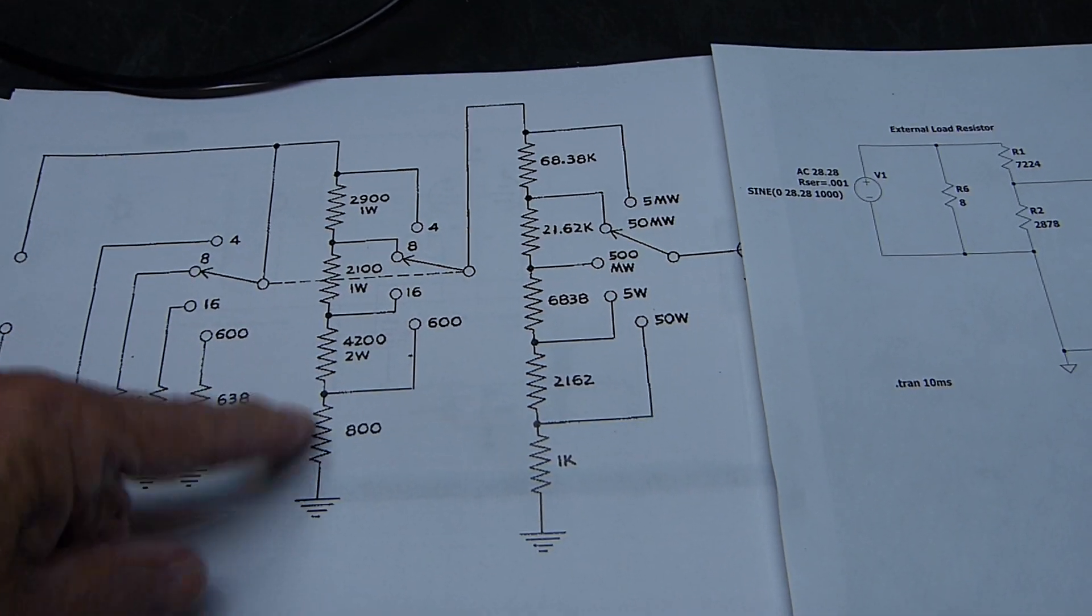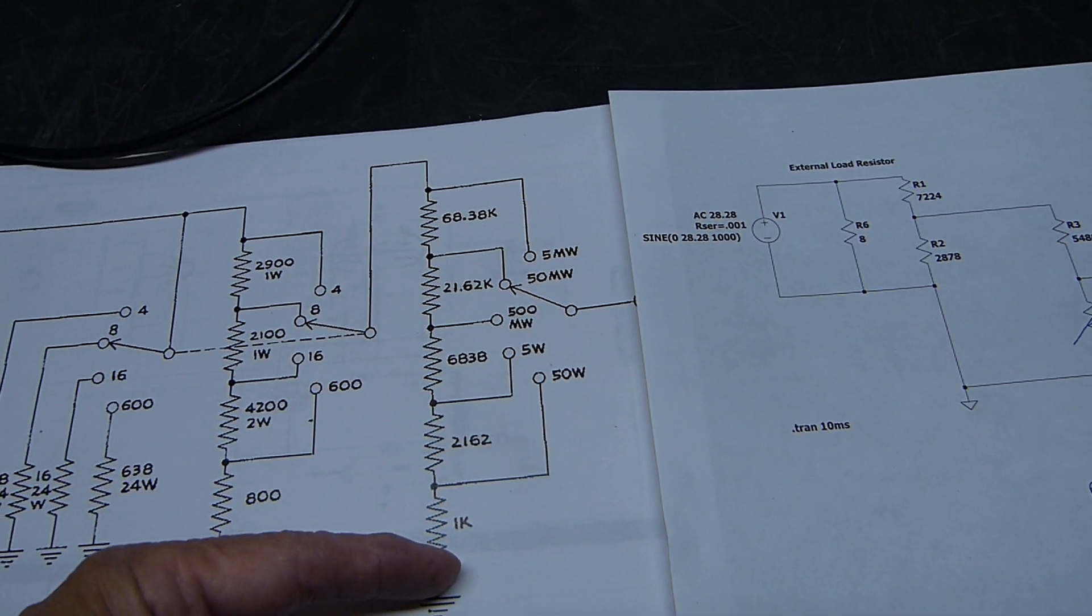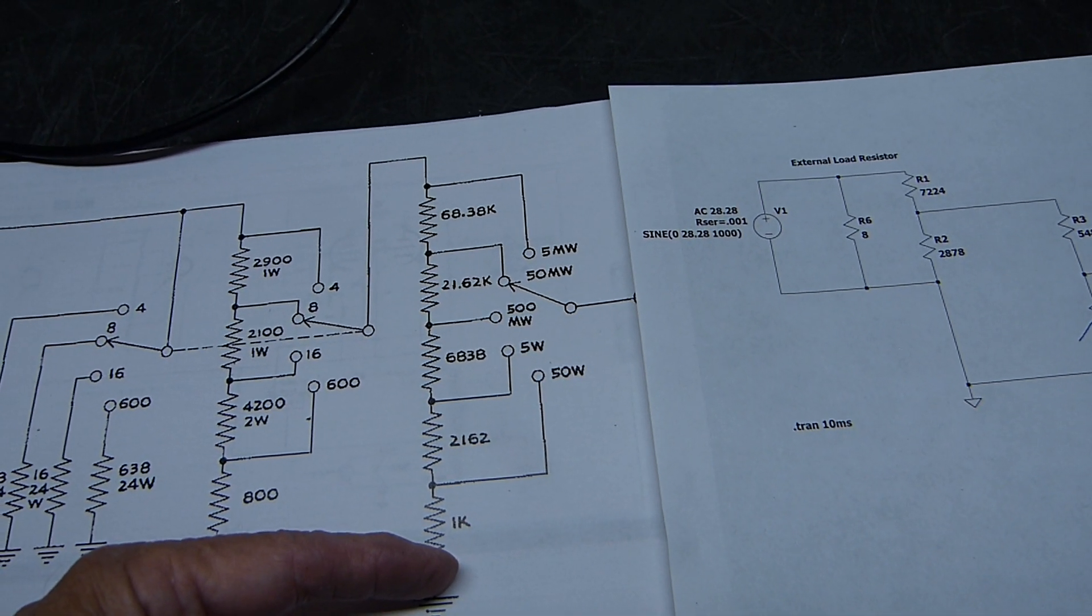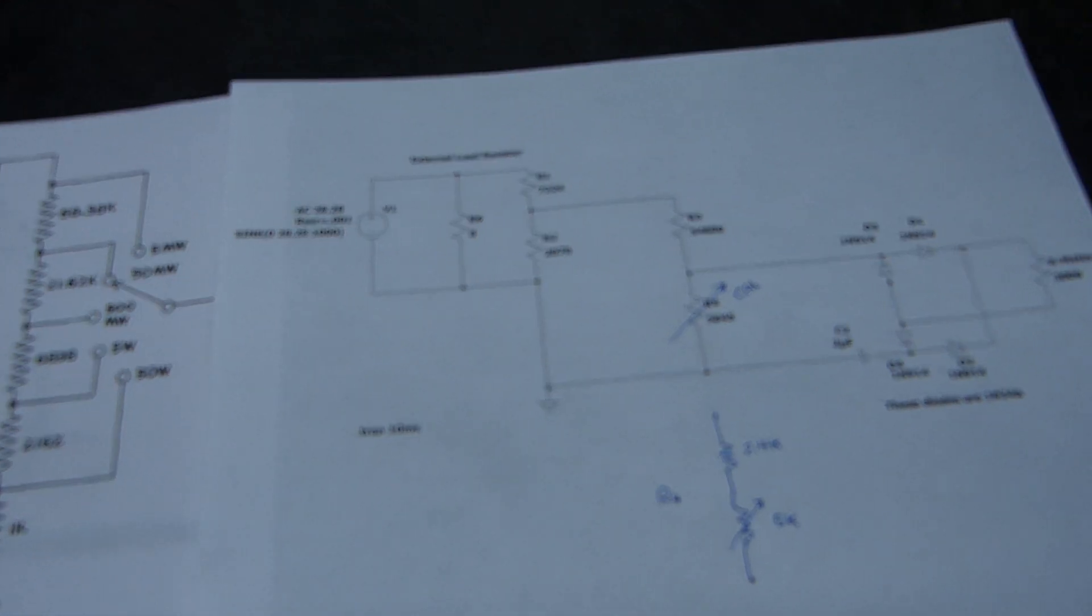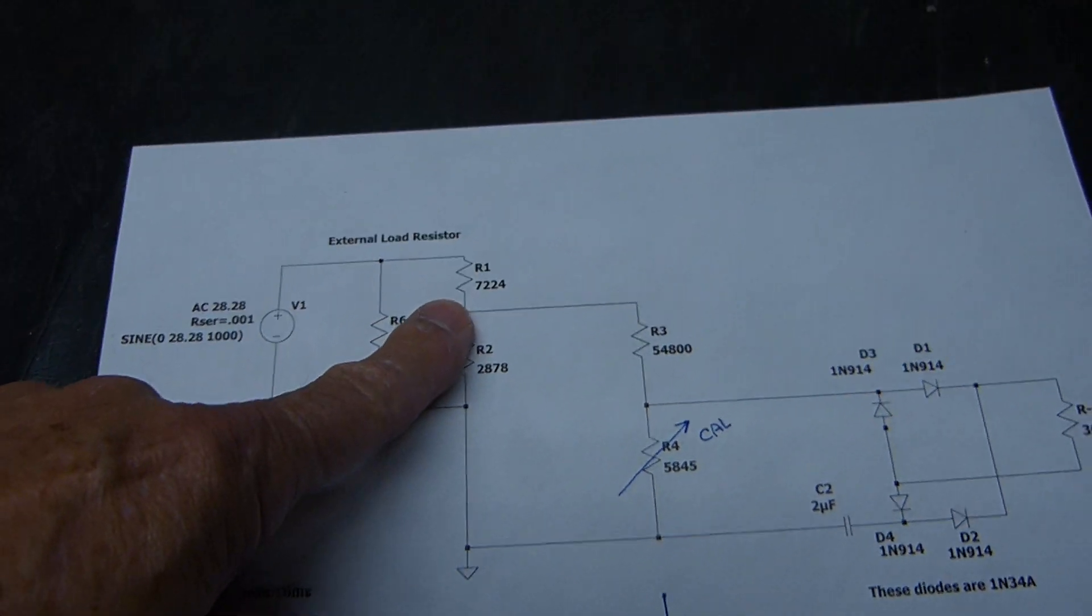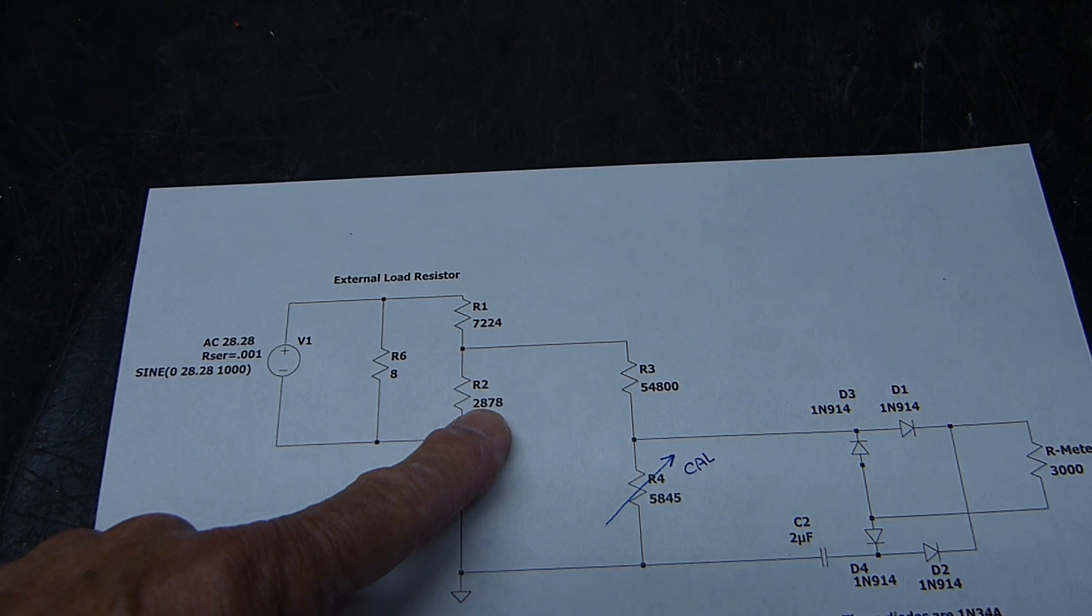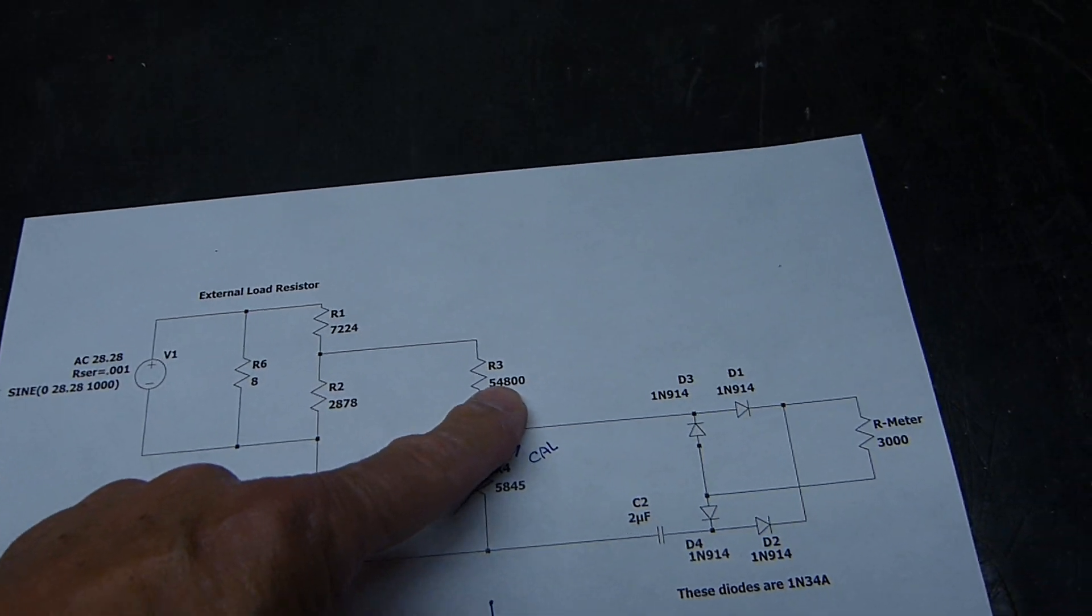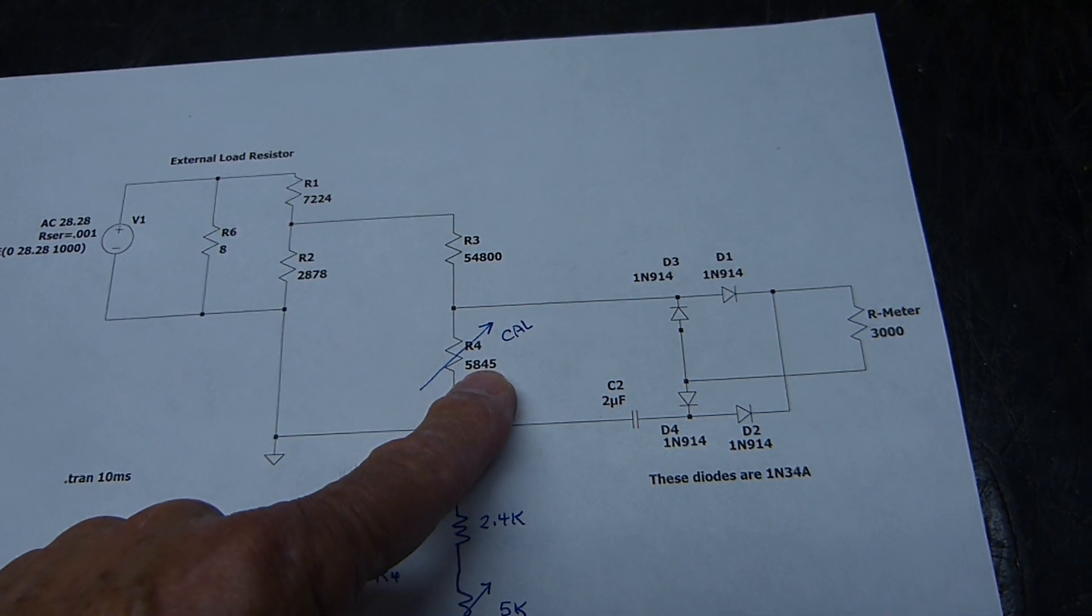You've got to have these two. This is out of the Heathkit AW-1. This is the newer version. This right here happens to be exactly 10k if you add all these resistors up, and this is 100k. What I did is I used some big 10-turn pots, some precision pots, so that I could dial it right in. I found out that these values, what I needed, were 7,224 ohms and 2,878 ohms.